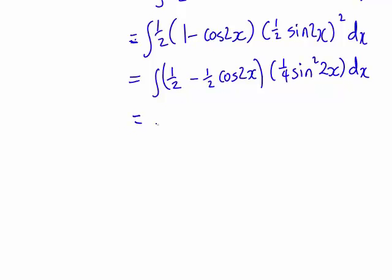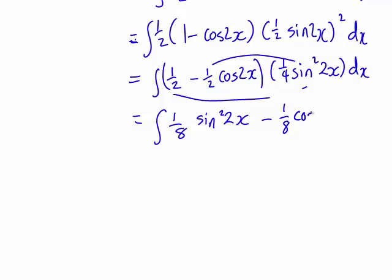Then what? Then if we multiply these terms together, we'll get one eighth sin squared 2x. And then minus, and again here we're going to get an eighth. But in this case it will be times cos 2x sin squared 2x. And we're still integrating this whole expression with respect to x.